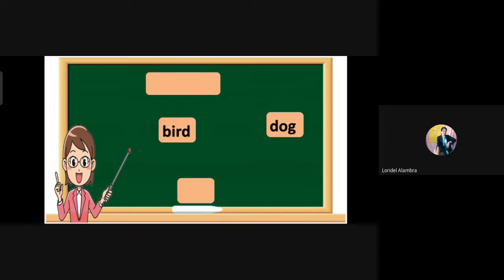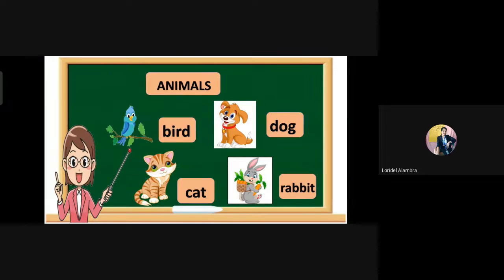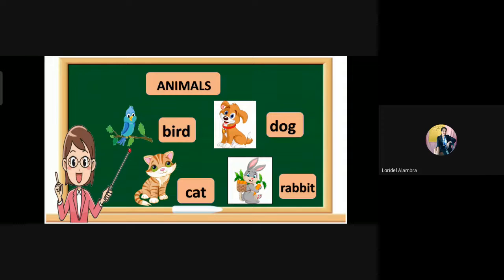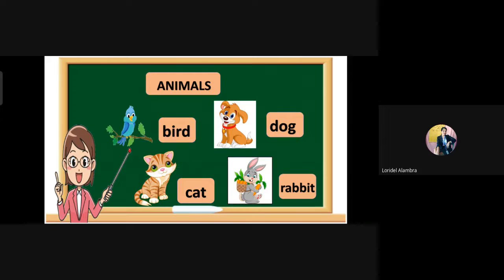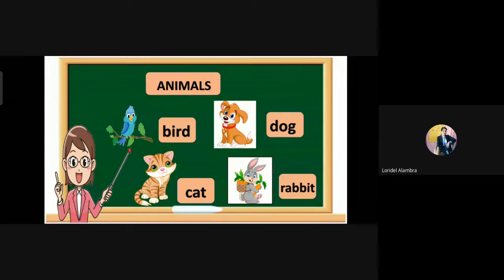In animals, we have bird, dog, cat, rabbit. As you can see, they don't have a specific name, so they just start with a small letter. What is a common noun? Very good. A common noun names any person, things, animals, and places. They don't have a specific name, so they just start with a small letter.